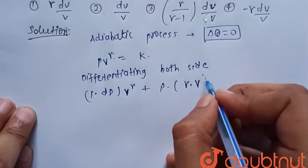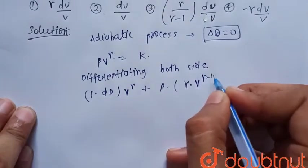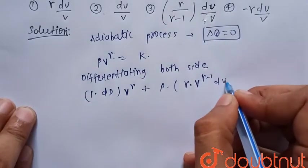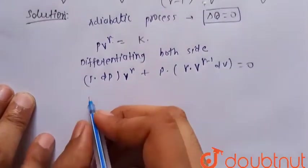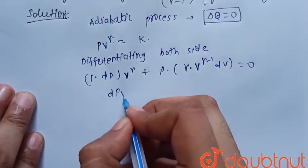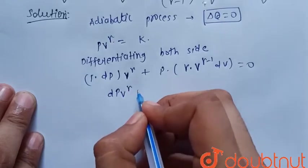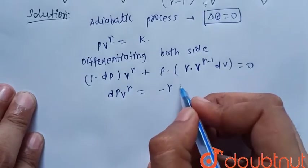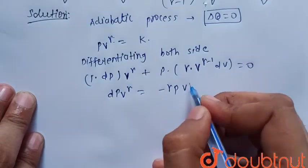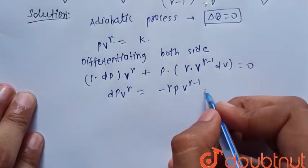is equal to zero. So dP V gamma is equal to minus gamma P V gamma minus one dV.